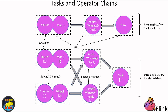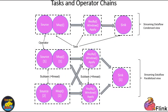You can change how these tasks are grouped and connected based on what your application needs. It's like having the power to adjust the gears on a bike to go faster or slower. In the figure below, you can see an example where a data flow is split into five smaller tasks, and each of them gets its own worker thread to work on it. This teamwork approach helps Flink handle lots of data smoothly.